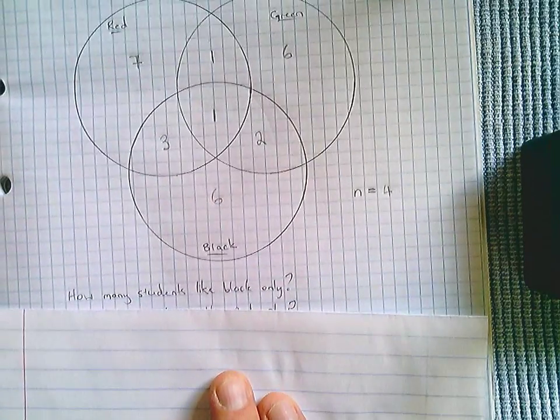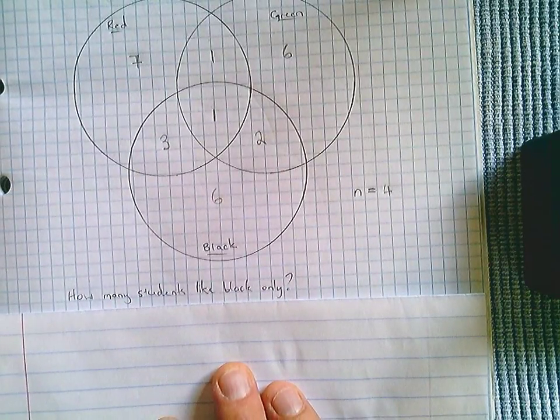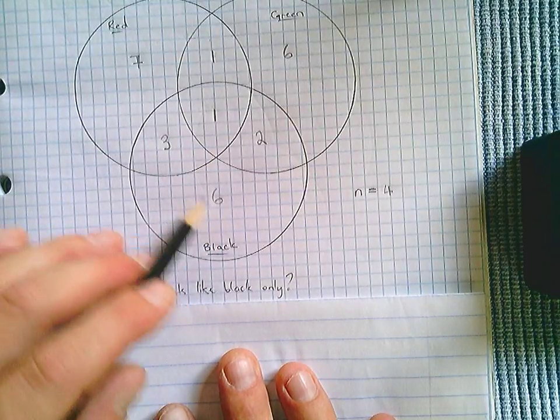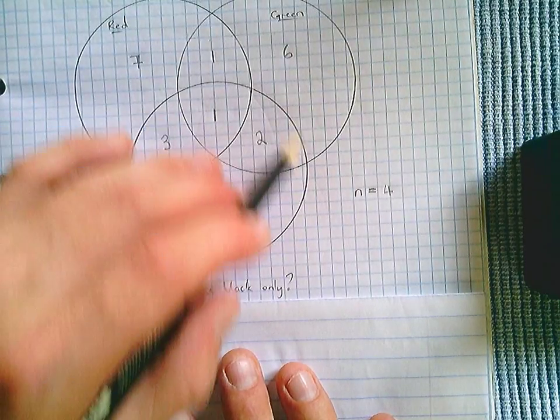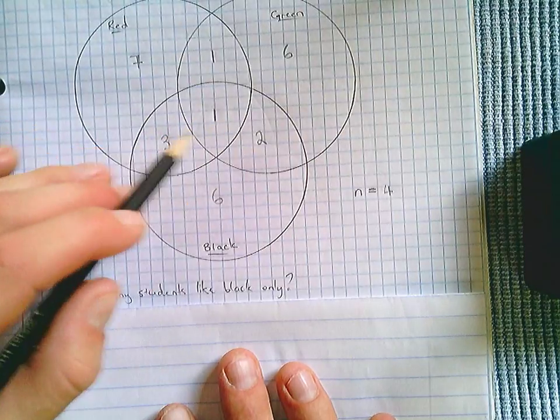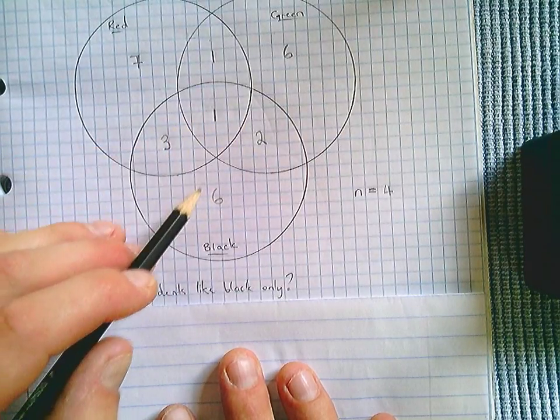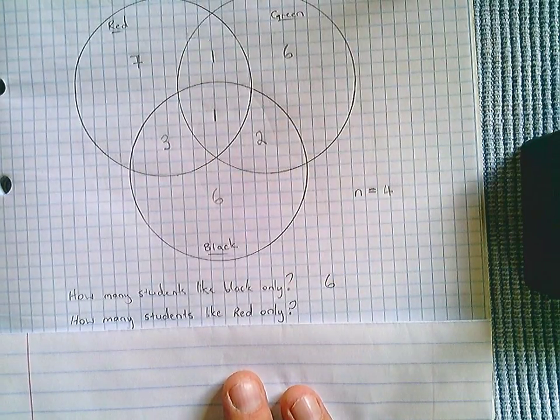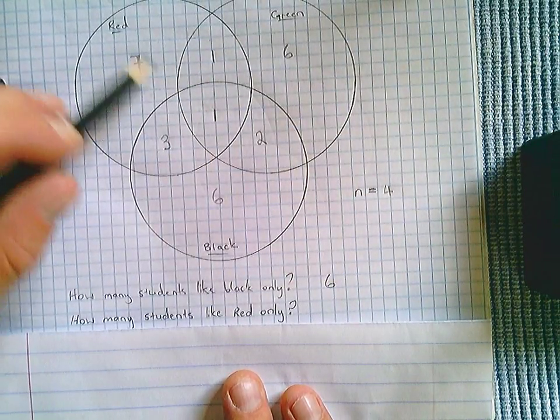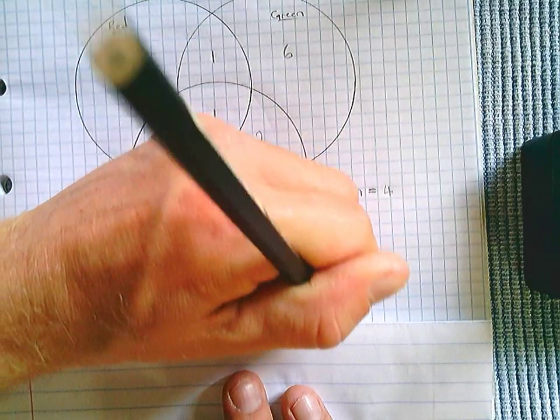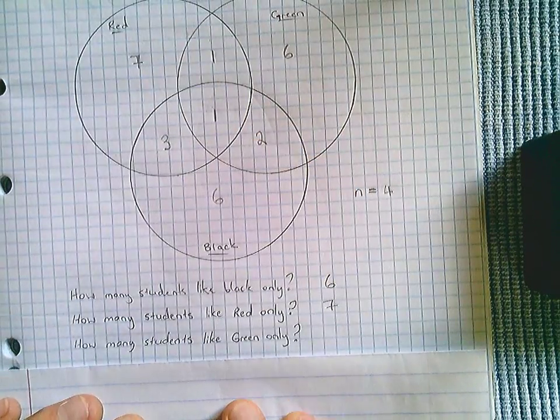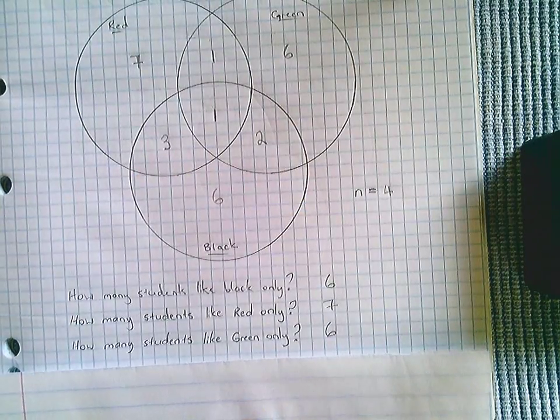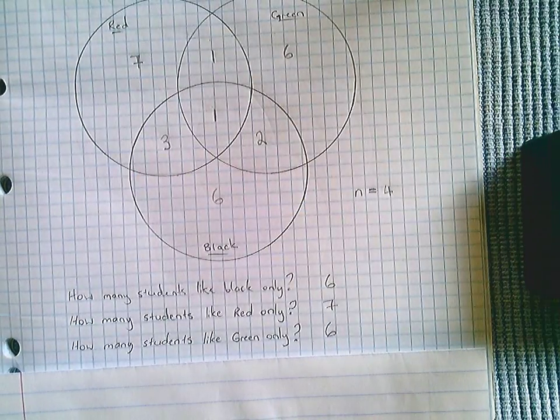I can quickly now answer these questions. How many students like black only? Here we have our black circle, but these guys like a combination of black and other colours. This person, or these people, only like black. So we've got six. How many students like red only? Seven. And how many students like green only? Six. And then we have satisfied the question.